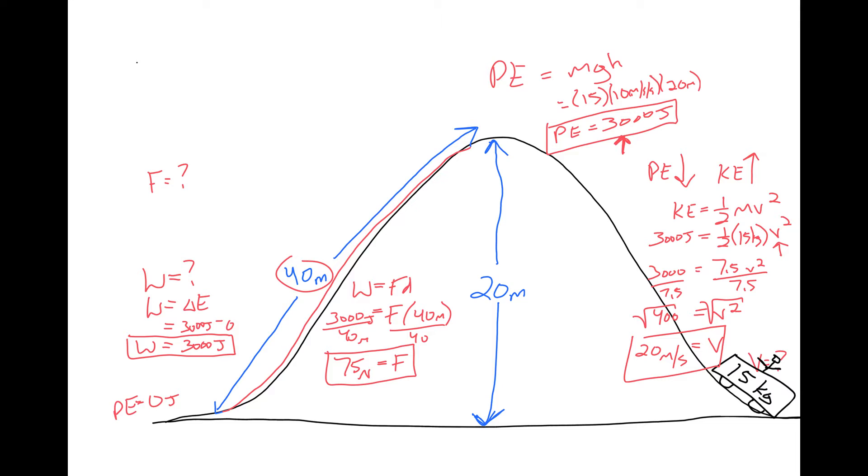So we found, again, let's follow the story. So we had our cart here in the beginning. We had zero potential energy. We did work, 3,000 joules of work, up the 40 meters, applying 75 newtons of force to get up to the top. It had potential energy of 3,000 joules.